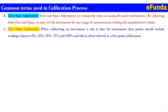Fourth is five-point calibration. When calibrating an instrument, as a rule, the instrument data points should include readings at a minimum of 0%, 25%, 50%, 75%, and 100%. This is commonly referred to as a five-point calibration.